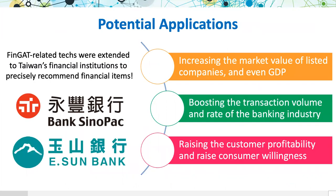Finally, FinGET-related techniques were extended and applied to several Taiwan's financial institutions. The initial A/B testing has proved to increase the turnover rate with more than 20–200% improvements and brings tremendous profits for their clients. In the future, we plan to develop a mobile app based on FinGET and provide financial services for the users.